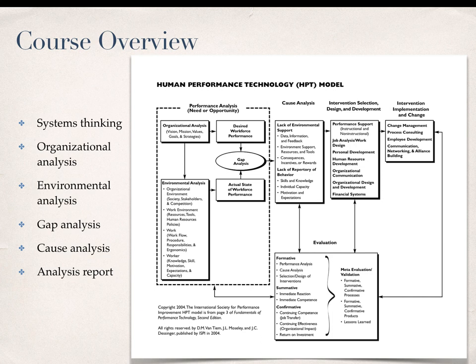By way of course overview, this is actually the first course that you should have taken in the sequence of four HPT courses in the concentration program that you are enrolled in. If you haven't, that's okay, but this course is the first in the sequence because it really is at the start of understanding the HPT model, which is for human performance technology. You'll see by taking a look at the model — and we'll get more into this later — this requires systems thinking. When we think of performance, we need to look at it from multiple perspectives concurrent with one another.